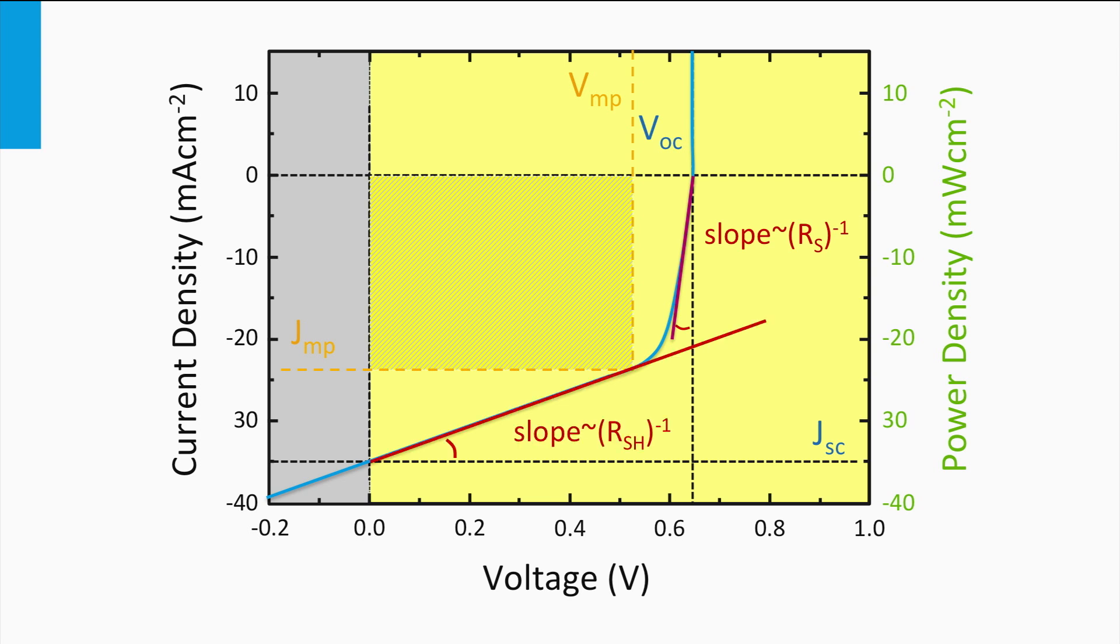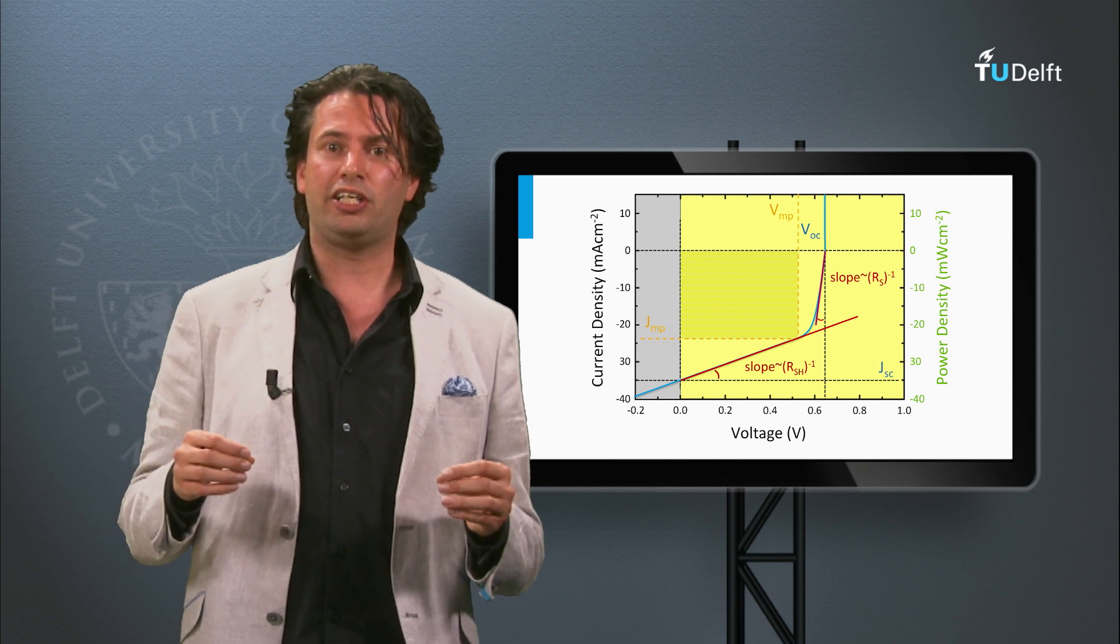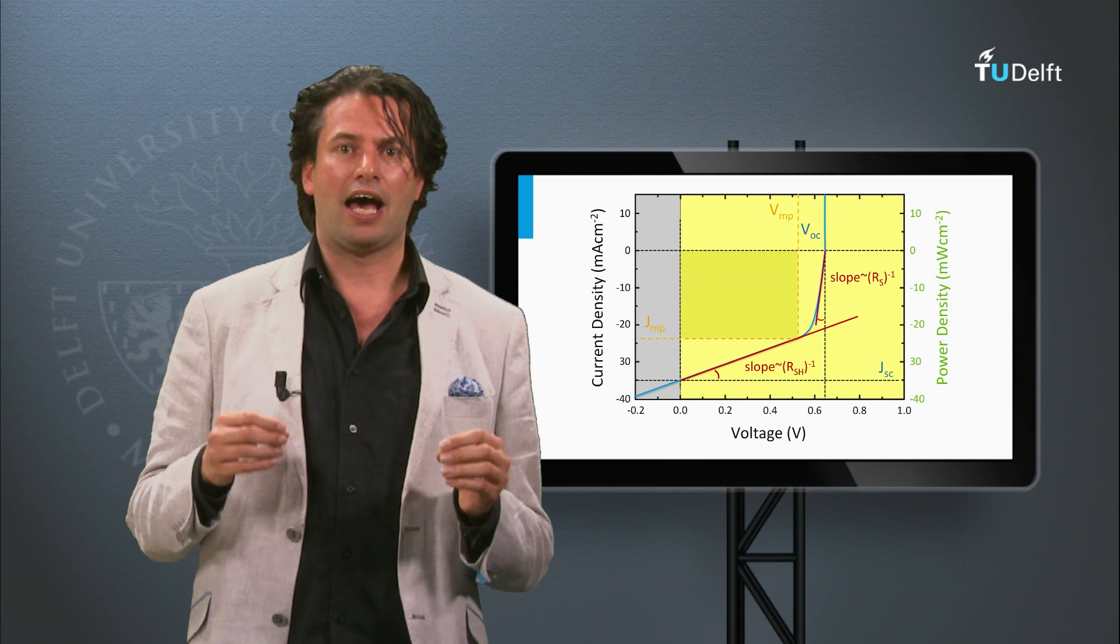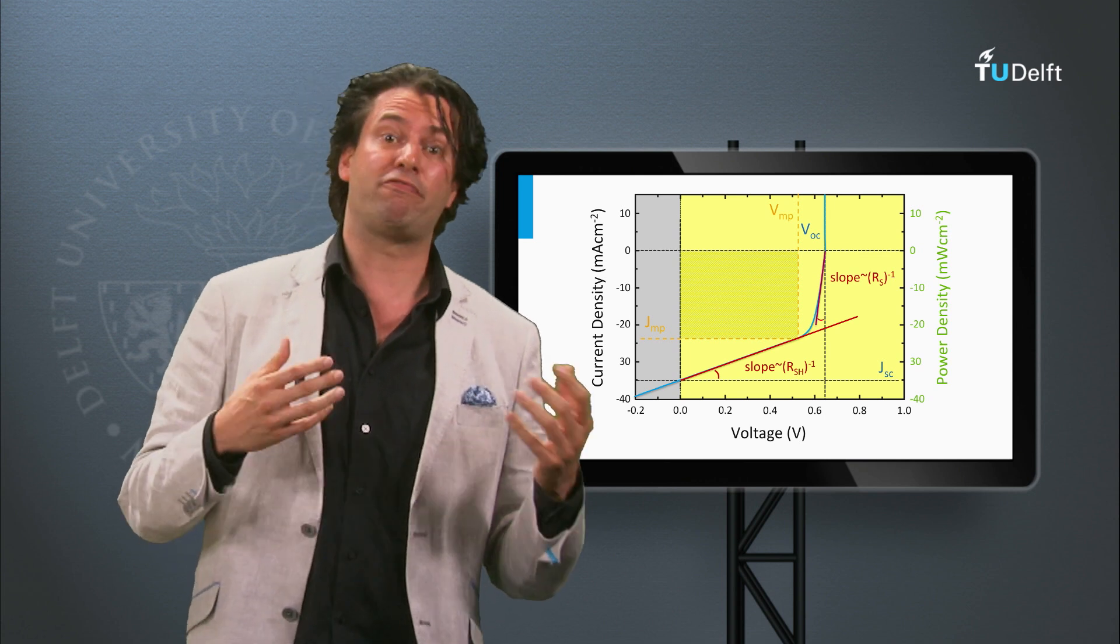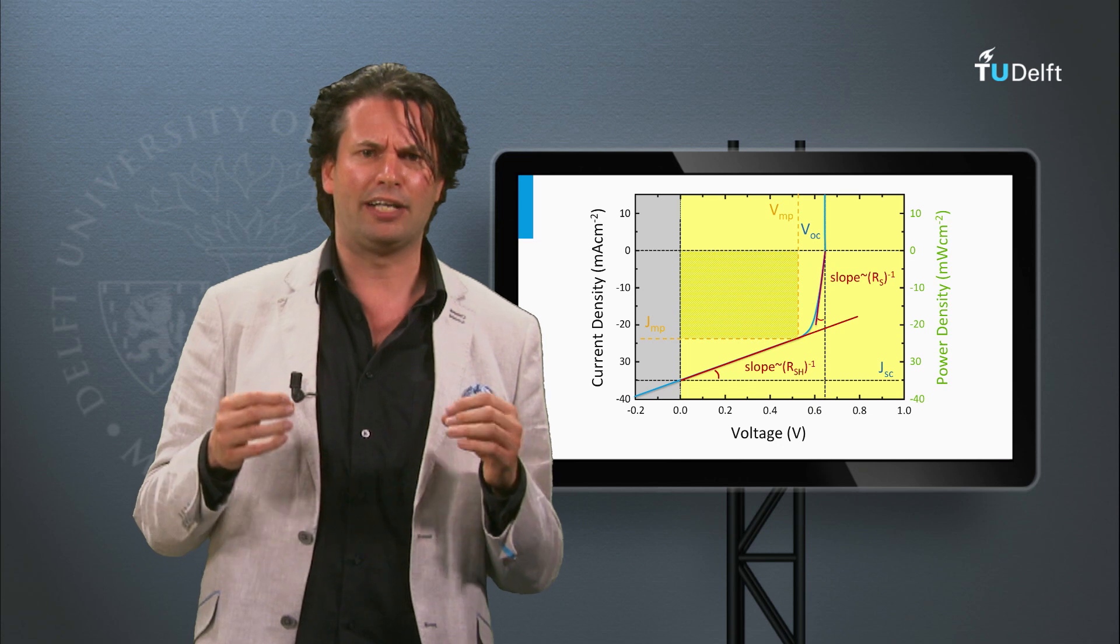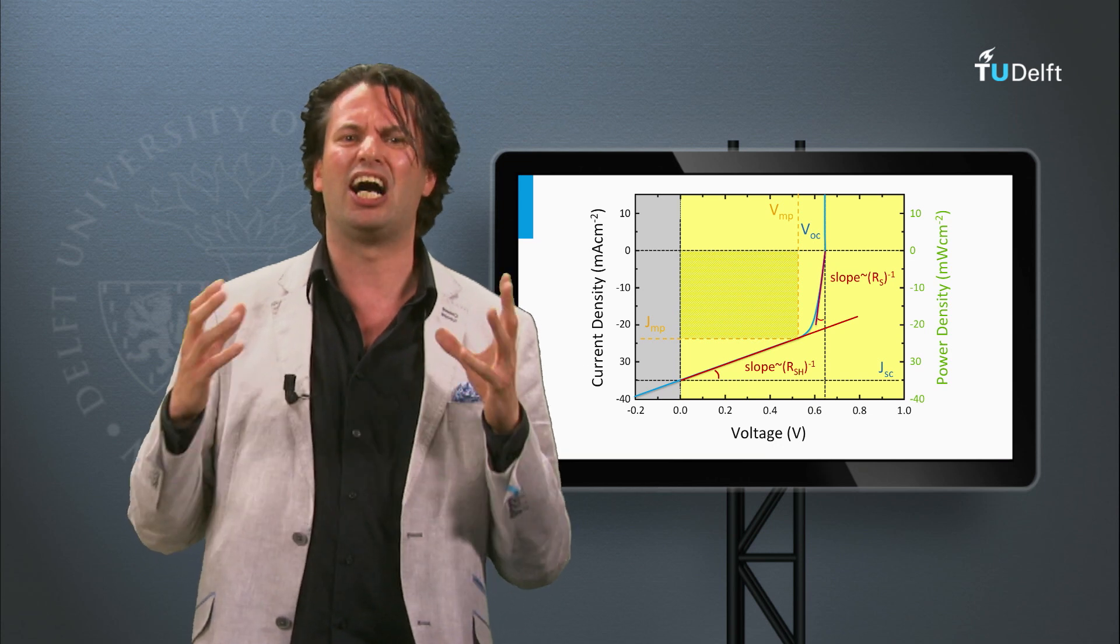The slope at the point corresponding to the short circuit current density in a J-V curve is 1 divided by the shunt resistance. The larger the shunt resistance, the closer the slope will be to zero and the larger the fill factor will be. In summary, the real solar cells and panels have series and shunt resistance. And in solar cell design and manufacturing it is important to minimize the series resistance and to make the shunt resistance as large as possible.